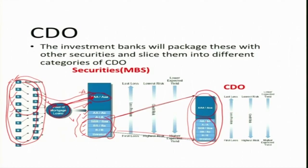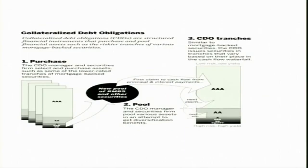Although the risk in these CDO tranches is very high, the expected return for holders is also high. But during the 2007-8 financial crisis, those who owned these CDOs did not get back their returns, and the banks who gave these loans began to suffer. This is the overall illustration of CDOs — the low-rated component of RMBS is transformed into CDOs, and the CDO manager and securities firm pool various assets in an attempt to get diversification benefits.